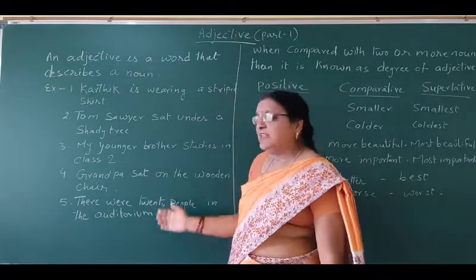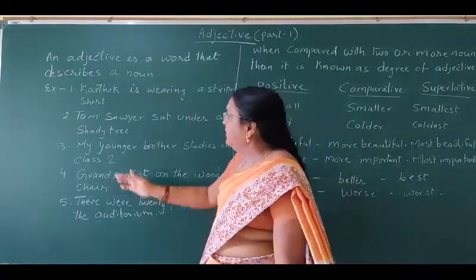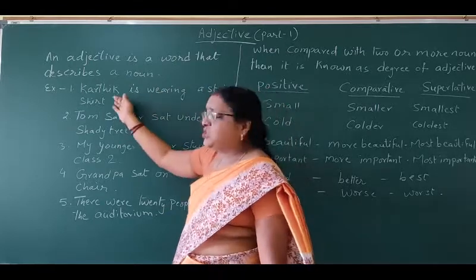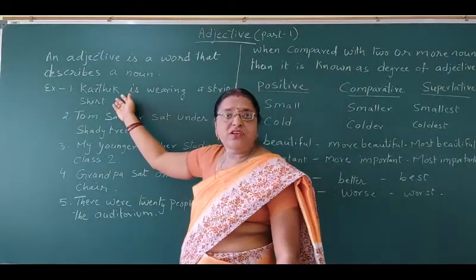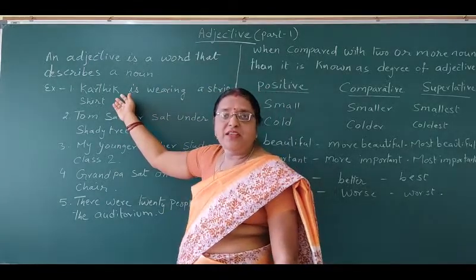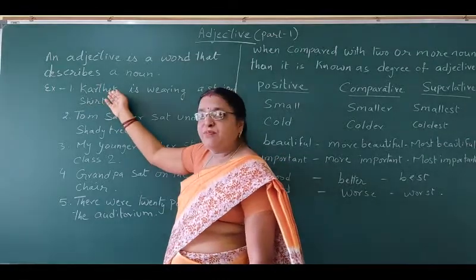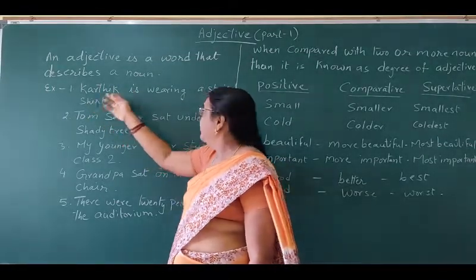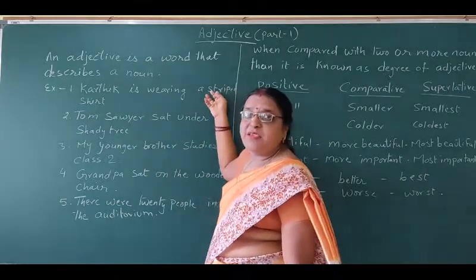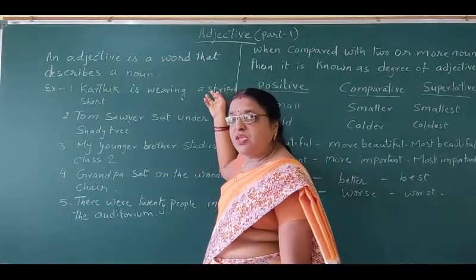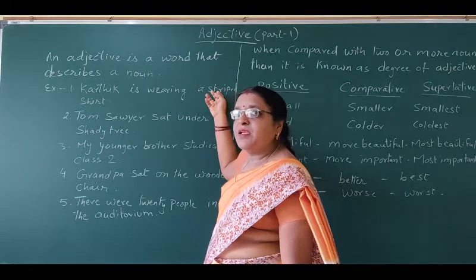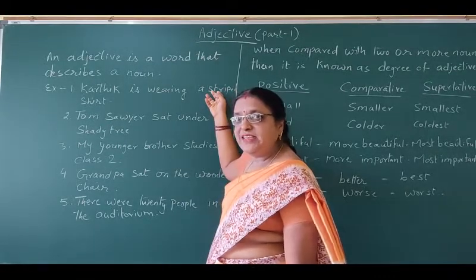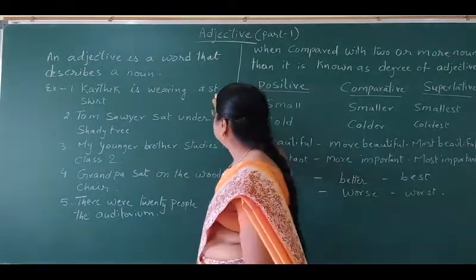So, let us practice in this exercise. Here, Karthik is wearing a striped shirt. Which type of shirt is he wearing? Here, Karthik is a proper noun. Shirt is a noun. So, striped is describing about Karthik's shirt. Which is the adjective over here? Striped.